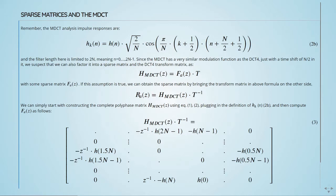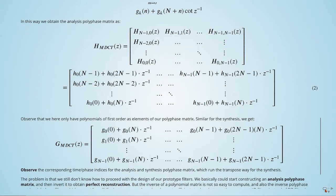We will have that the sparse matrix is given by H_MDCT times T to the power of minus 1. We can simply start with constructing the complete polyphase matrix H_MDCT using equations 1 and 2, like we've seen before.